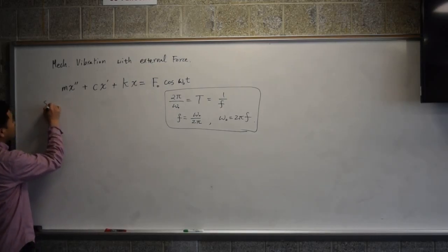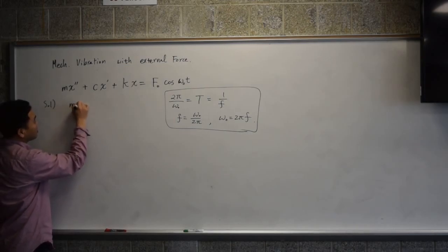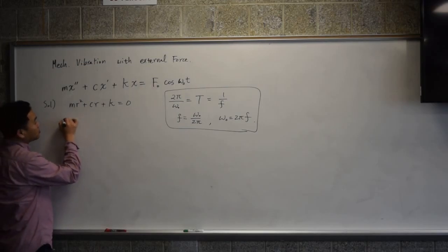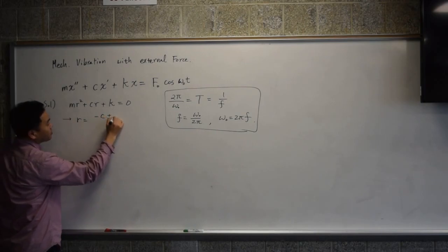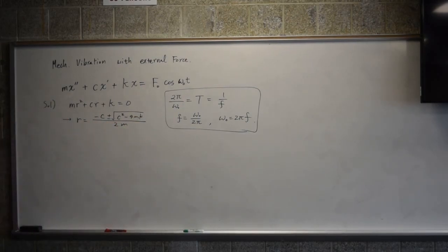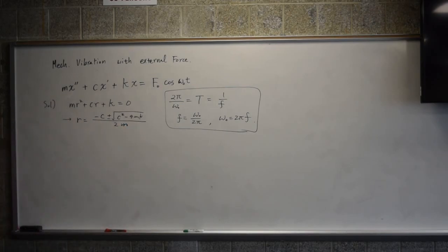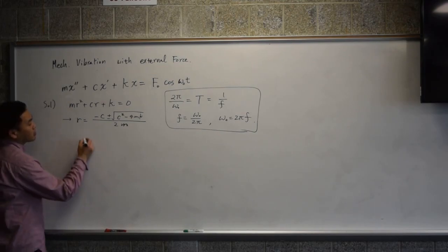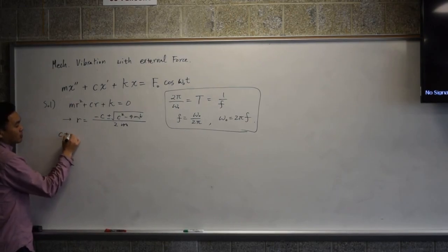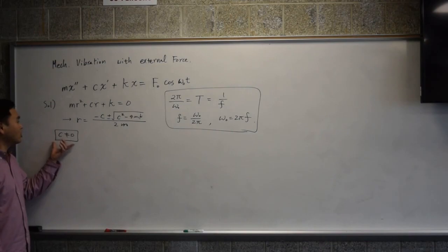Let's actually try to solve it by method of undetermined coefficients. First, let's write down the characteristic equation, because that gives you the complementary solution. Putting this into the quadratic formula gives you these values. We're going to assume that c is non-zero. If c is zero, there is something interesting that goes on, but I'll handle that in a separate case. So we're going to say that c is non-zero.